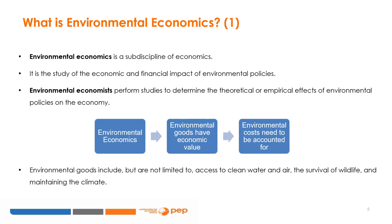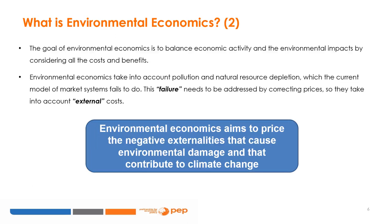Policies in this regard, such as carbon taxes or various forms of regulation, are subsequently studied. Environmental goods include things like access to clean water and air, the survival of wildlife, and maintaining the climate. A closely related field is natural resource economics, which focuses on demand, supply, and allocation of natural resources for sustainable use. The goal of environmental economics is to balance economic activity and environmental impacts by considering all costs and benefits, both direct and indirect. This form of economics takes into account pollution and natural resource depletion, which the current market model fails to do. This failure needs to be addressed by correcting prices so that they take into account external costs.